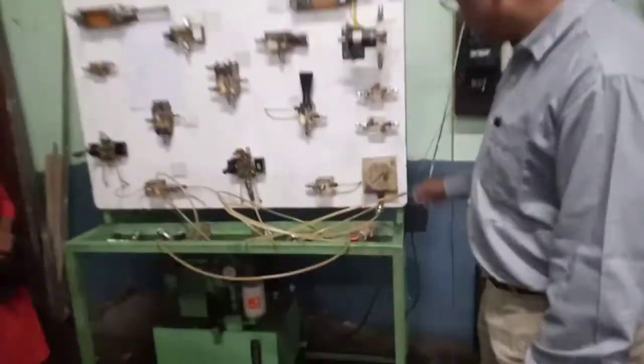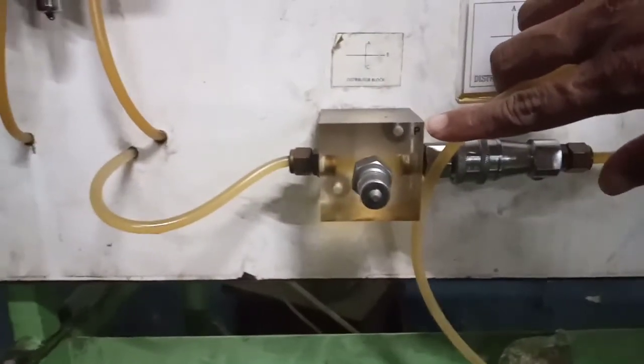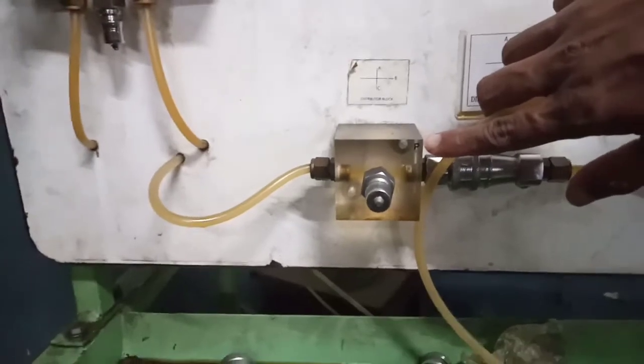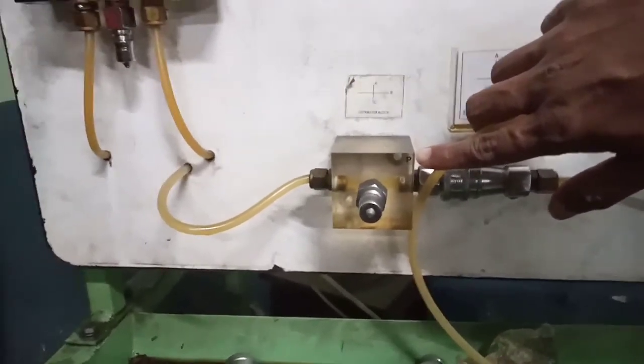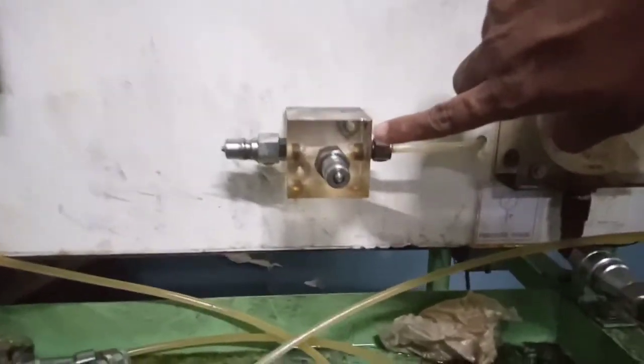It will come here, not here, here. You can see P is written over here. So, this is the block where the pressurized oil comes from the pump. Simultaneously, we have another block here named as T. You can see T here.